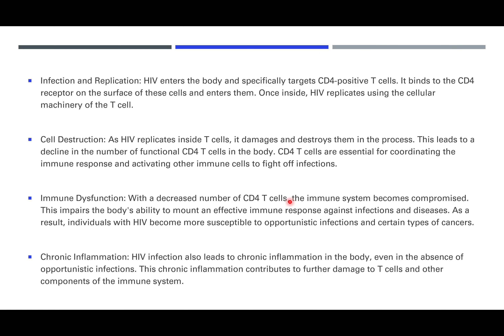When HIV generally enters the body, it will specifically target certain T cells. It will bind to the CD4 receptors on CD4-positive T cells and enter them. Once inside, the HIV replicates using the cell's machinery — using reverse transcriptase enzymes and all the genetic material within the T cell to proliferate itself. After a while, it replicates, damaging and destroying all the processes within the T cell until the T cell eventually dies.